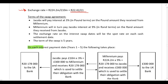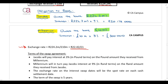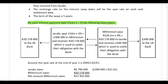We need to look at what happens each year when companies pay interest on these loans. We've already calculated the obligations to the bank. Every year for the next five years, Jacobs pays interest of 20,178,000 rand to their bank and Millennium pays interest of 300,000 pounds to their bank. The obligations with the banks do not change.